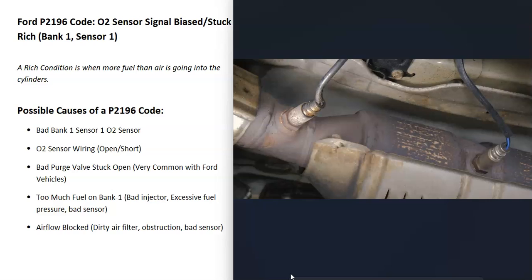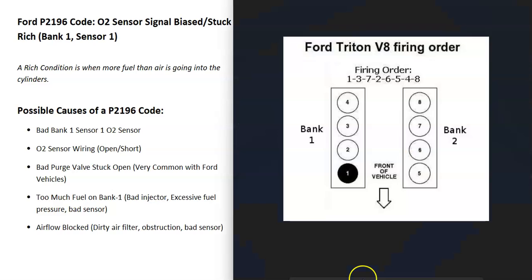For some reason, this bank one sensor one oxygen sensor is reading a rich condition, which basically means more fuel than air is going into the cylinders. Bank one is always the side of the engine with the number one cylinder, so if you have a V6 or V8 engine, you just find the number one cylinder and that side is going to be bank one.